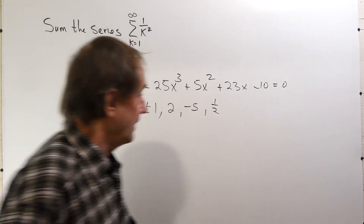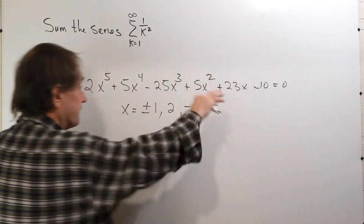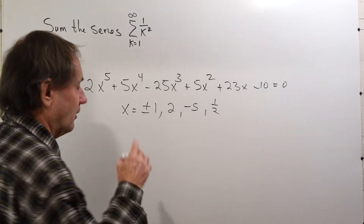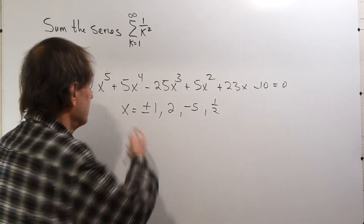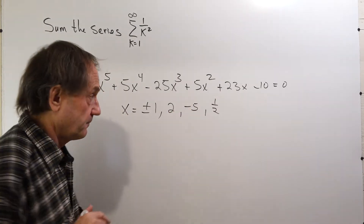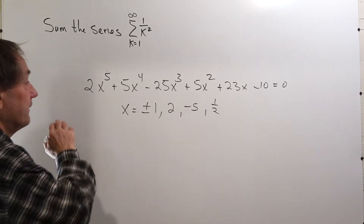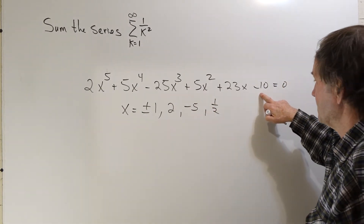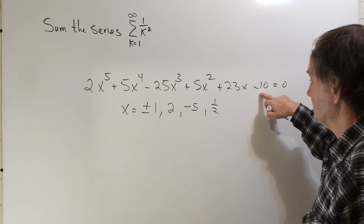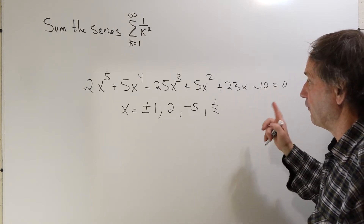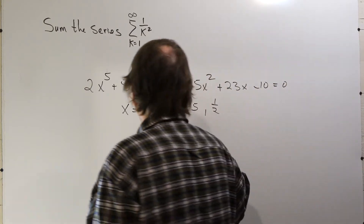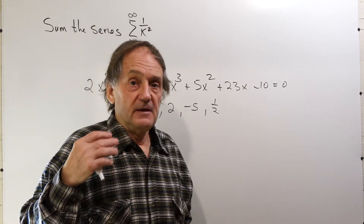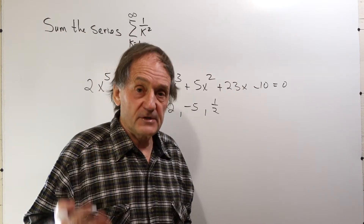That gives five roots to the equation, and we have a fifth-order equation. An nth-degree polynomial has n roots — this is fifth order, so we have five roots. Now, if you divide through by the coefficient of the constant term so that the constant term has a coefficient of one, it turns out that the coefficient of the linear term is the negative of the sum of the reciprocals of the roots.